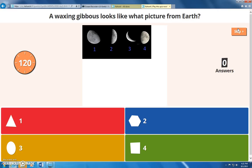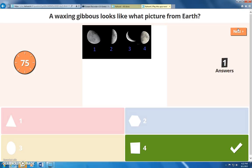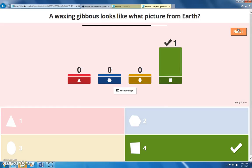Alright, our next question is, a waxing gibbous looks like what picture from earth? So, you remember from your reading, waxing means getting bigger. So, which of these ones seem or appear to be getting bigger? And gibbous means that it's bigger than 50% illuminated. So, using those two helpful hints, try to figure out which one you think is a waxing gibbous. That is correct. That one is a waxing gibbous. It's getting bigger, and it will eventually become a full moon.